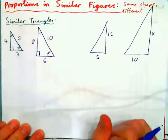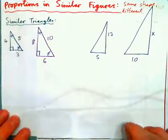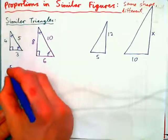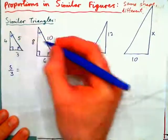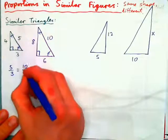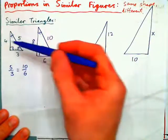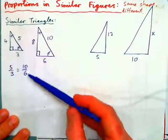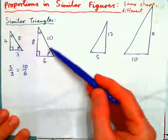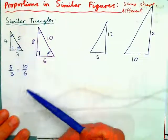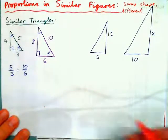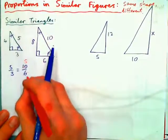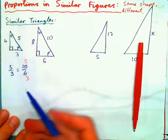Now, proportions in similar figures — what does that mean? If you take this length here, 5 over 3, that is equal to 10 over 6. What it's saying is, if the figures are of exactly the same shape with the same angles, then you can form a proportion from the ratio of the lengths of any two sides. 5 over 3 equals 10 over 6, and if we put this in lowest terms, 2 into 10 goes 5 times, 2 into 6 goes 3 times, so we have 5 over 3 equals 5 over 3.